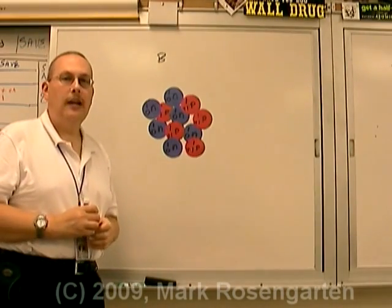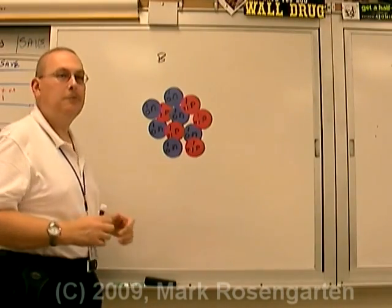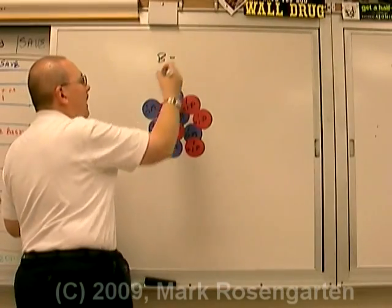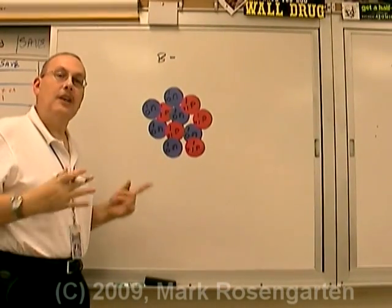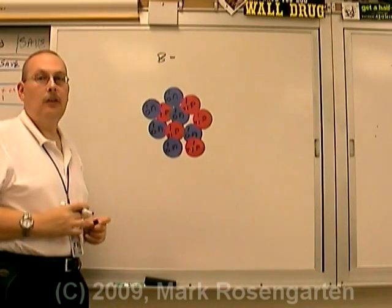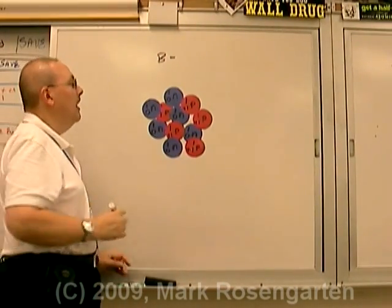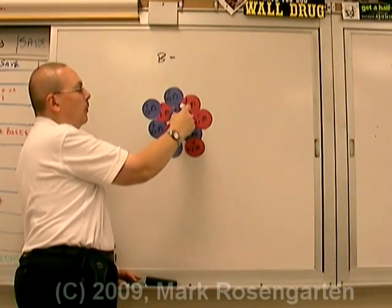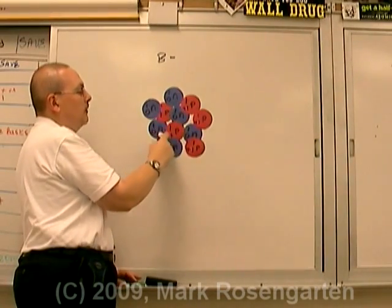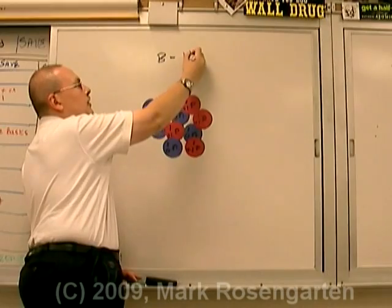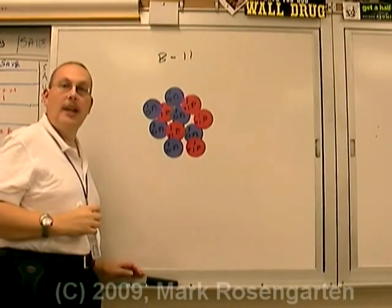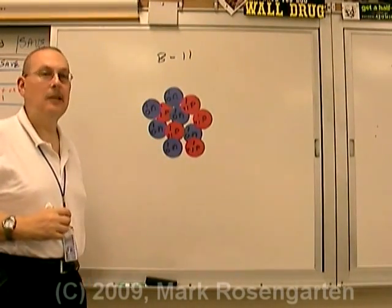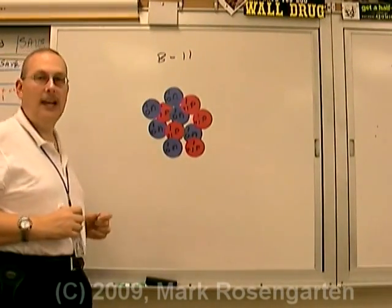Another way of identifying isotopes is by writing the symbol of the element followed by the mass of that particular isotope. Counting all the particles, this isotope has a mass of eleven. This is known as boron-11, and the eleven refers to the mass number of the isotope.